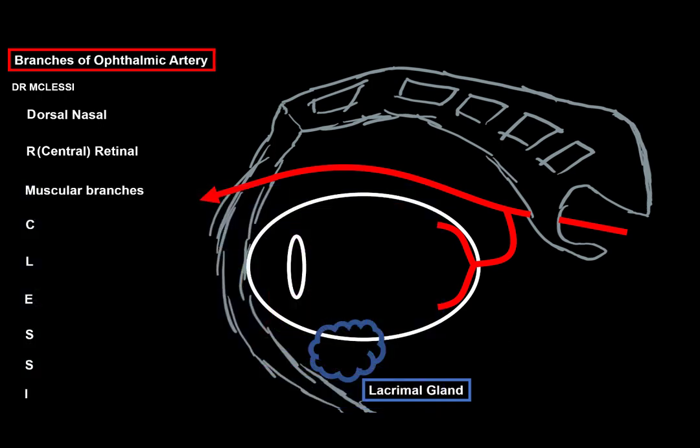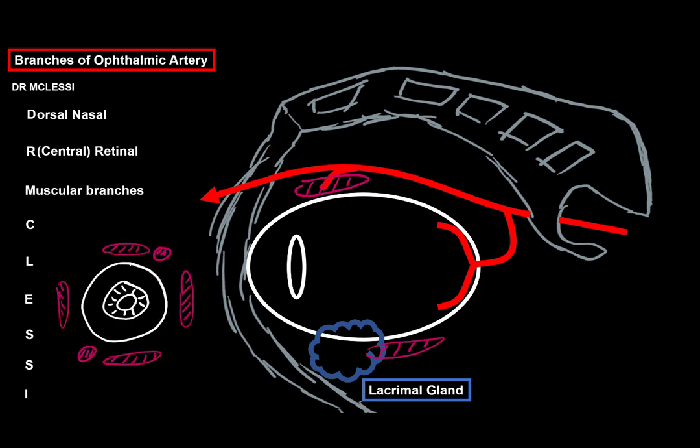Next is the M, M for muscular branch, supplying the external muscles of the eye. And the external muscles of the eye are four rectus muscles, or straight muscles, and two oblique muscles, one on the top and one on the bottom. This artery will supply all of them and then give off an important branch called the anterior ciliary artery, which forms a vascular zone under the conjunctiva of the eye.